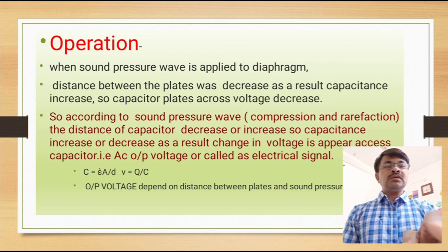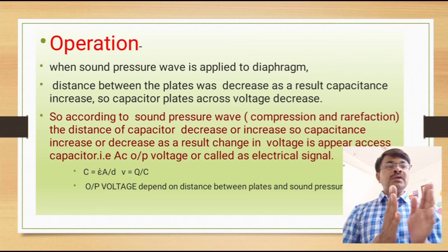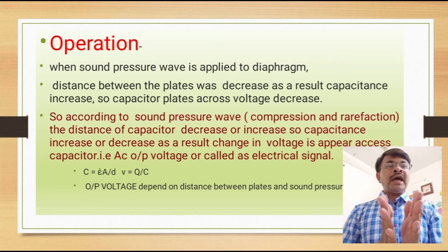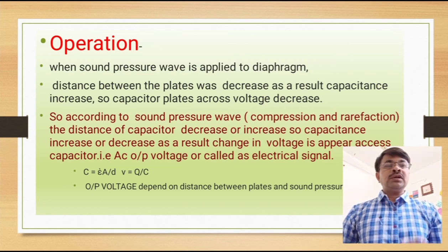This is the formula for capacitance: C = εA/D, where epsilon is the dielectric material constant, A is the area of the plate of the capacitor, and D is the distance between the two plates. Epsilon and the area of the plate are fixed — they cannot be changed, as they are fixed during manufacturing time.